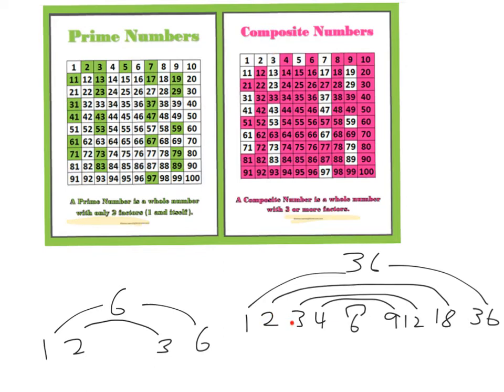If you had to name all the factors of 36, they would be these ones here. We have 1, 2, 3, 4, 5, 6, 7, 8, 9 factors for 36. It is composite.